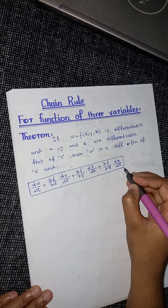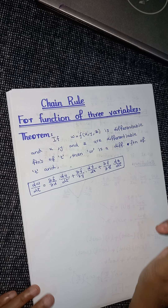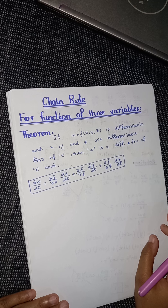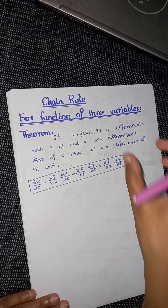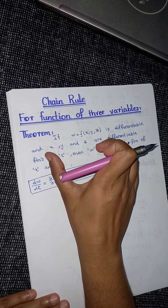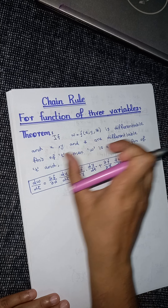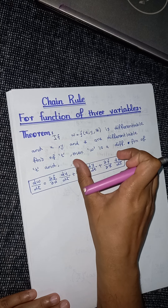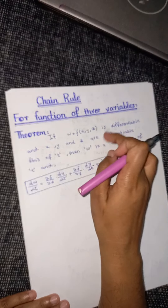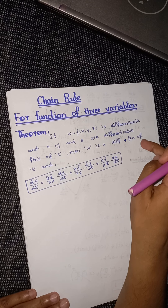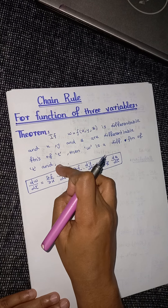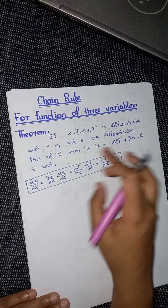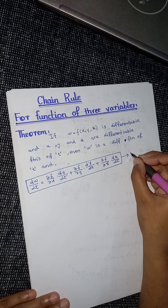Now let's look at the theorem again. The theorem says that you have a differentiable function, and x, y, z are further differentiable functions of t. Then w, your original function, would be a differentiable function of t, and if we apply the chain rule we get this formula — we call this equation number one.